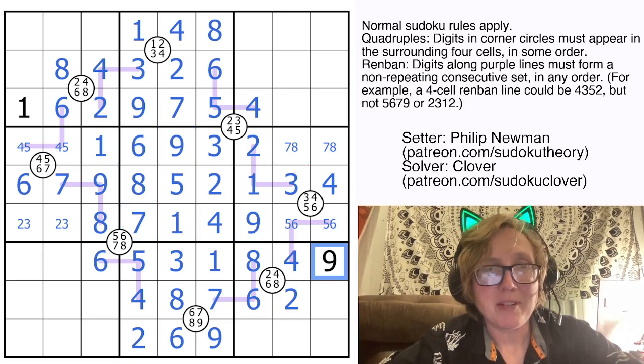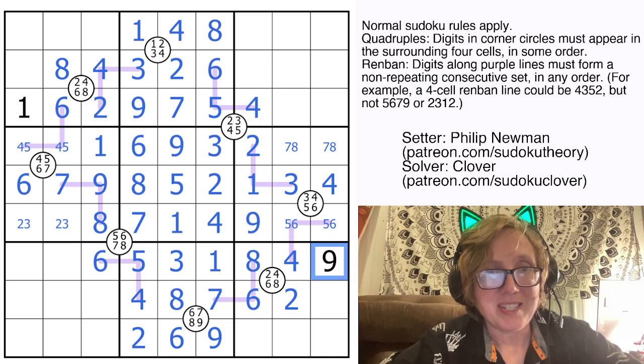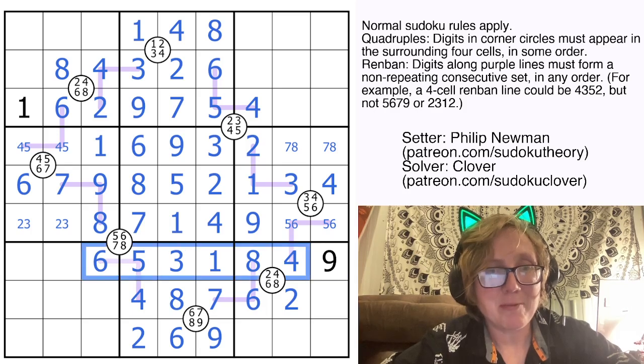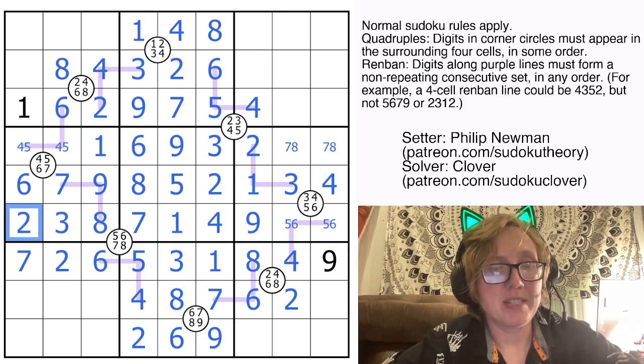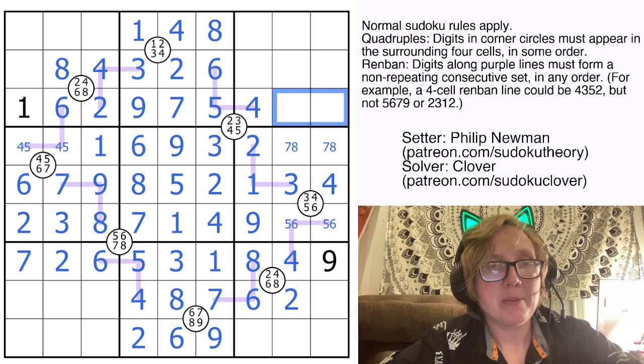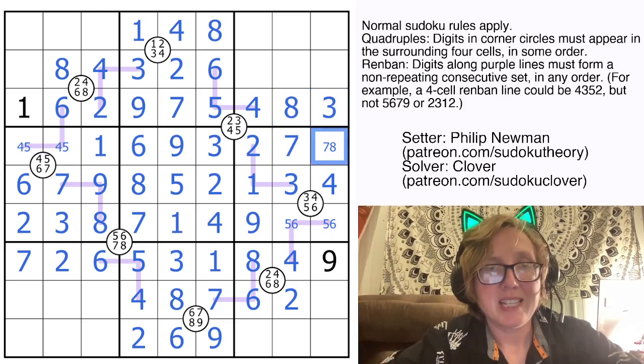And I believe that we are to the point of just being able to do Sudoku to finish this off. So let's have a look. So in this row, we need 2 and 7. They'll go there and there, which resolves this. In this row, we still need 3 and 8. They'll go there and there, which resolves this.